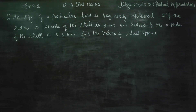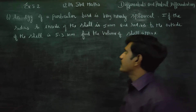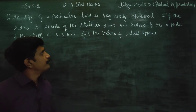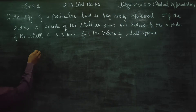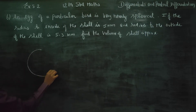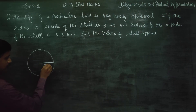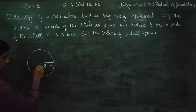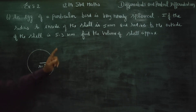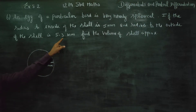Dear 12th standard students, in Exercise 8.2, an egg of a particular bird is nearly spherical. The radius to the inside of the shell is 5 mm, and the radius to the outside of the shell is 5.3 mm.